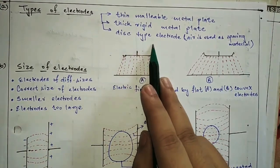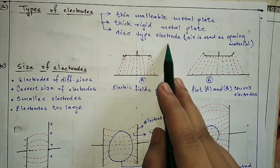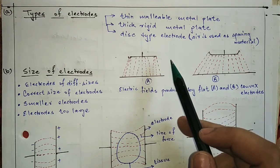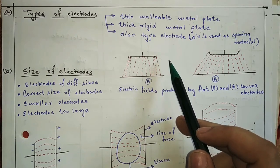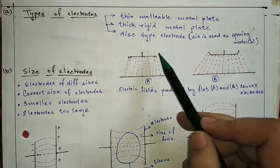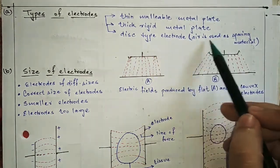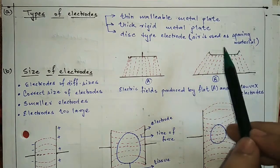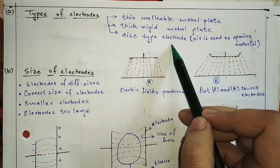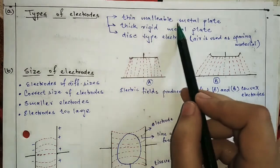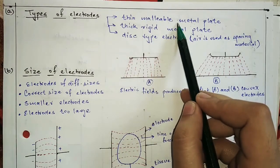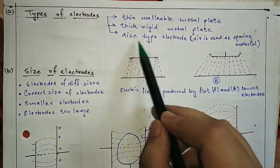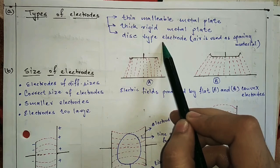Next is the disc type electrode. This disc-shaped, circular electrode has no direct contact with the skin. Between the skin and the electrode, air works as a spacing and insulating material. The disc type electrode is also covered with transparent plastic.